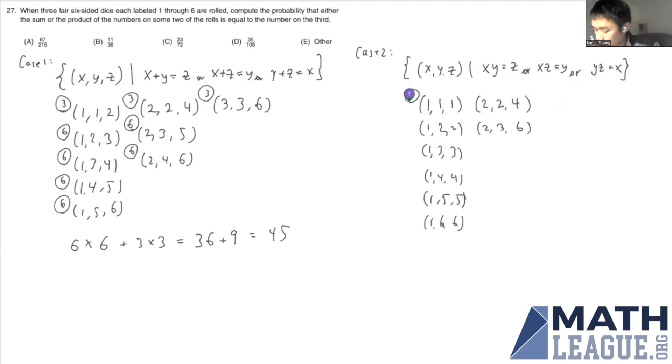This is a special one, because 1, 1, 1 only has one permutation. They're all the same number. But the rest either have 3 or 6. So here we have 6 counts of 3 permutations, plus 1 count of 6 permutations, and 1 count of 1 permutation. That gives us 18 plus 7, that is 25 for this case.